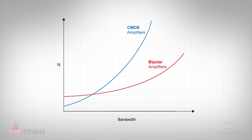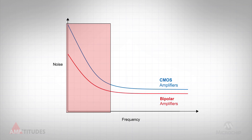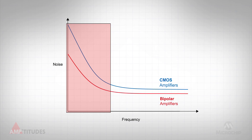Hence, bipolars are typically better suited for high bandwidth, high slewing applications. When it comes to noise performance, CMOS transistors have worse 1/f noise relative to bipolar transistors. At low frequency, the noise is dominated by irregularities in the conduction path and noise due to the bias currents within the transistors. In a bipolar transistor, the conduction path is buried inside the silicon, as opposed to near the surface on the CMOS transistor.